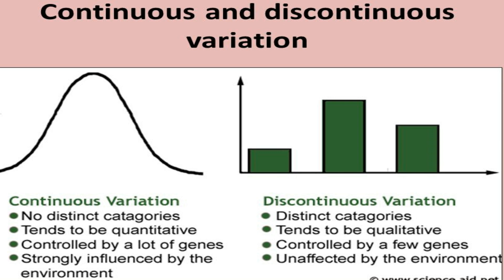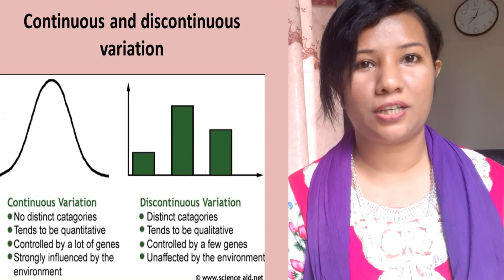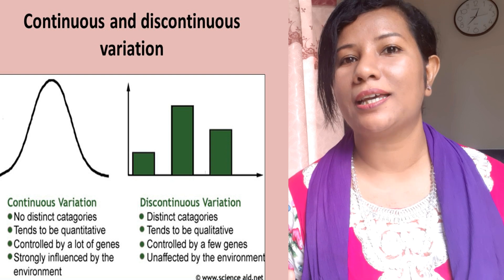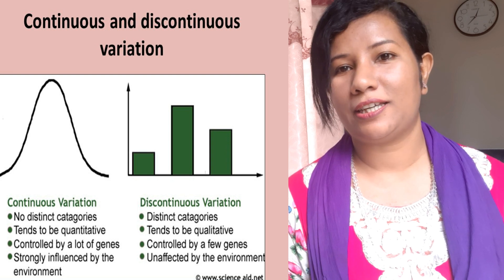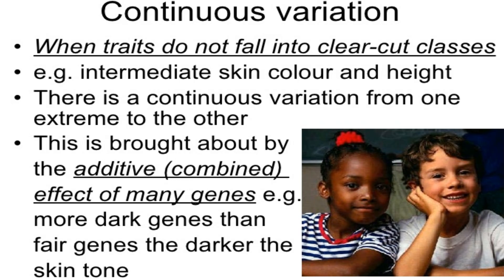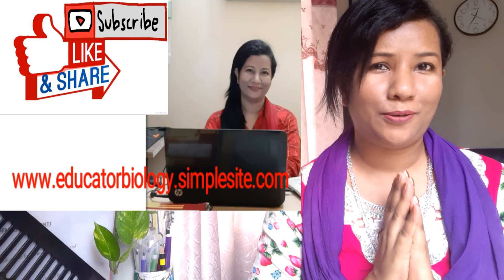Discontinuous variation is not modified by environmental change, while continuous variation is modified by environmental change. For example, greater exposure of the skin to sunlight will produce a darker skin color.